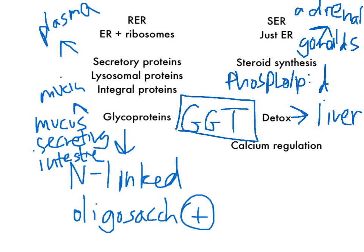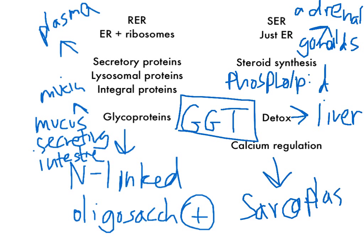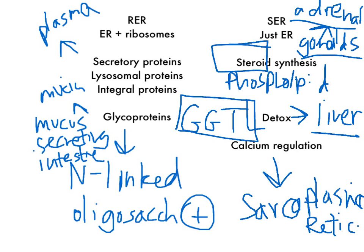For calcium regulation, there are some SERs in certain cells that only do calcium regulation — that would be the sarcoplasmic reticulum. When talking about muscle cells and calcium regulation, we're thinking about the sarcoplasmic reticulum. So to summarize: adrenal and gonad cells handle steroid synthesis, the liver handles detox with the microsomal CYP system and GGT as a marker, and the sarcoplasmic reticulum handles calcium regulation.